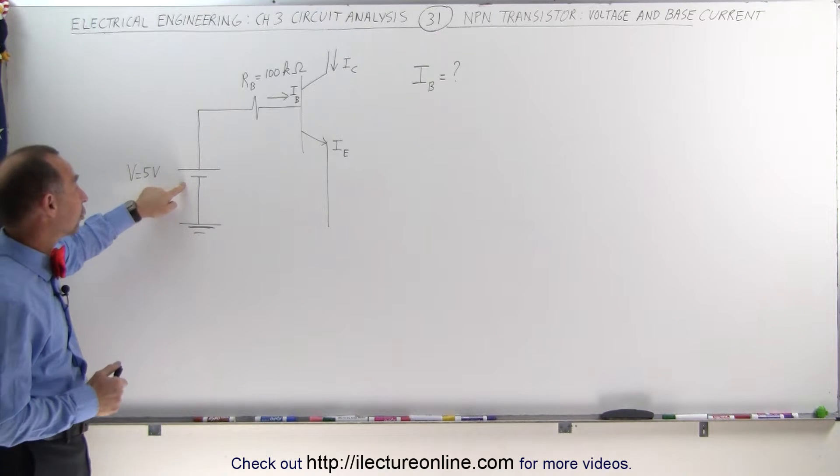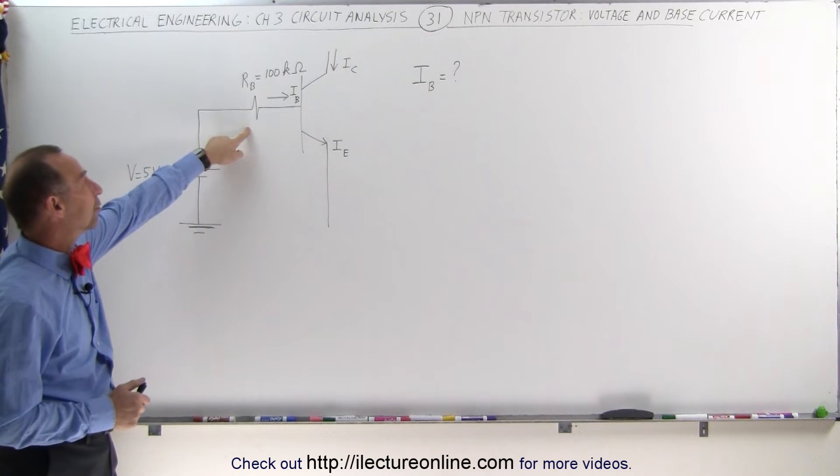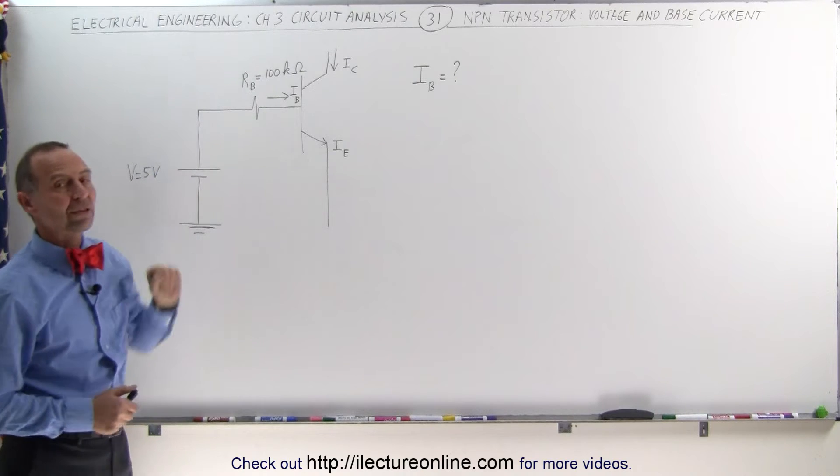So let's say we have a 5 volt voltage source, we have a 100k ohm resistor, how much is the base current?